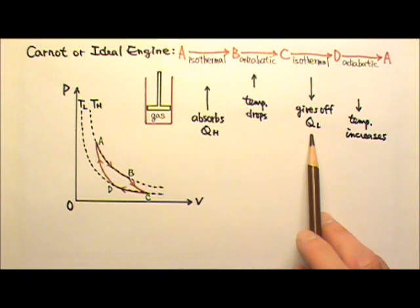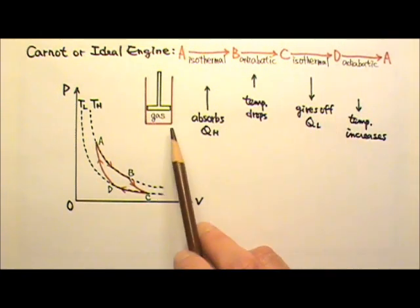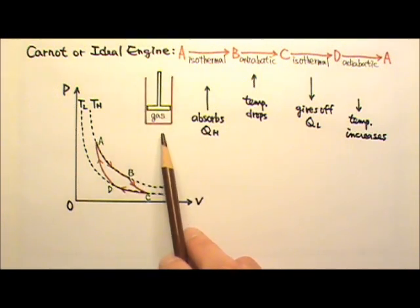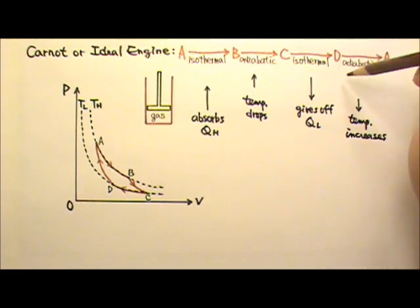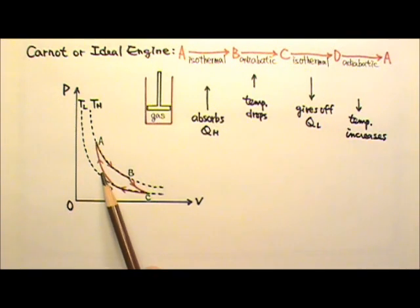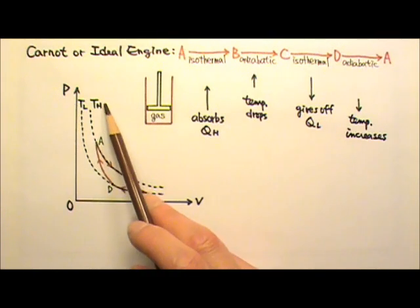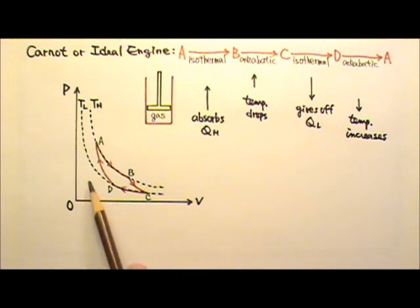And then we switch to adiabatic process. Put the gas cylinder in a very well insulated environment so there is no heat exchange. And then we push the piston down to compress the gas further. Because the gas gets compressed without heat exchange, its temperature goes up and goes back up to TH and back to state A. And then the Carnot cycle can repeat over and over again.